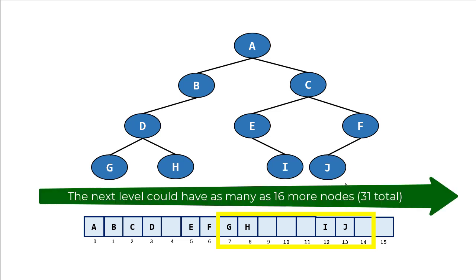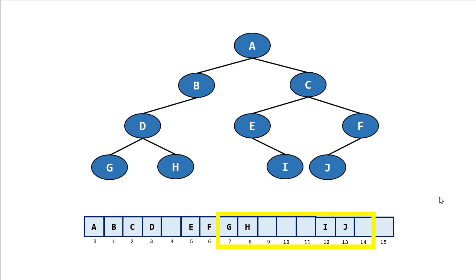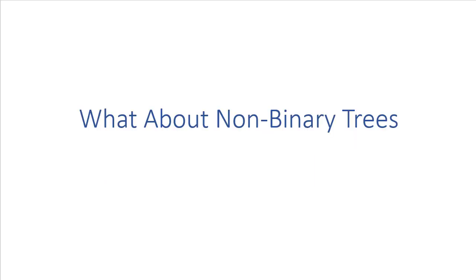I recommend practicing by adding children to try to figure out where those nodes go. When working with complete trees, this is a really efficient way to store the tree — specifically thinking of heaps, where an array-based implementation makes much more sense than using links. This is also a good example of how the abstract idea of a data structure doesn't always match its implementation: here we have a non-linear data structure implemented with a linear one, flattening the tree into an array.